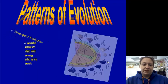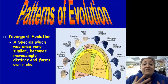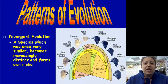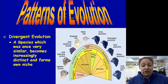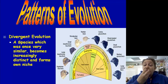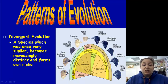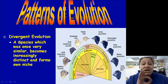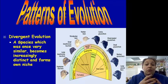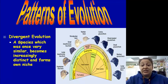Patterns of evolution: we see divergent evolution, where a species that was once very similar becomes increasingly distinct and forms its own niche. This is what happened with Darwin's finches — they used to be very similar, but as food availability pressured them, their beaks became specialized. Large beaks could crack nuts, and thin beaks could get between bark to reach worms and bugs inside trees.